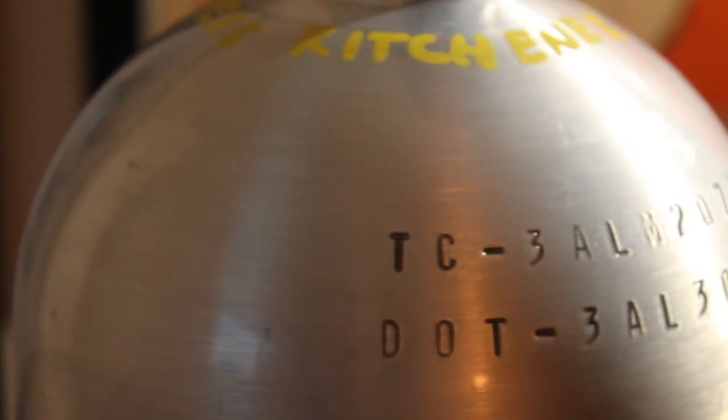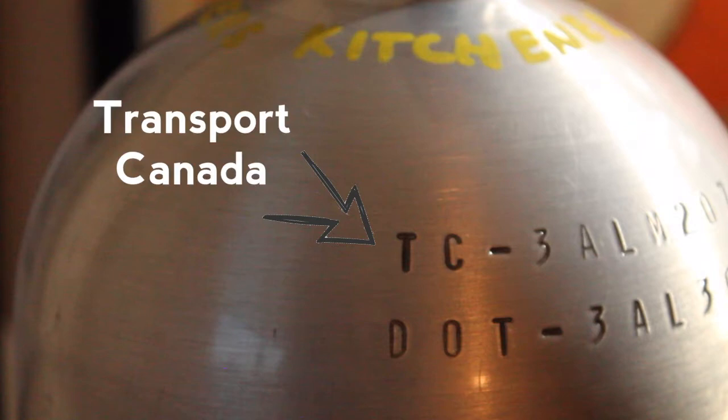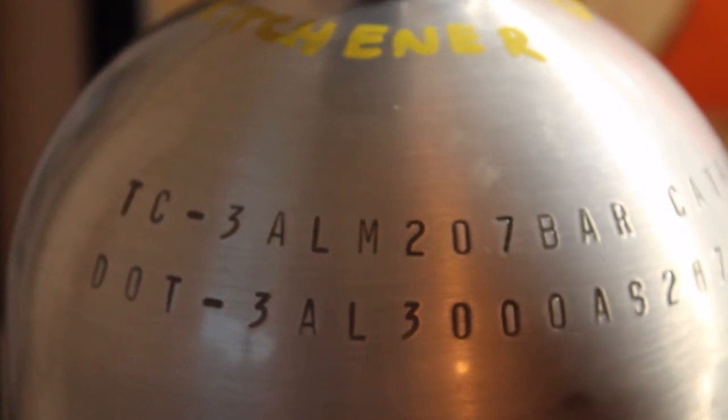So up here on the top row on the far left, we have the first letters TC and that stands for Transport Canada. That stamp means that this particular tank adheres to Transport Canada's regulations. That is the regulatory authority in Canada that says this tank is indeed okay to be filled, used, transported, and meets all of the requirements that they need for a cylinder.